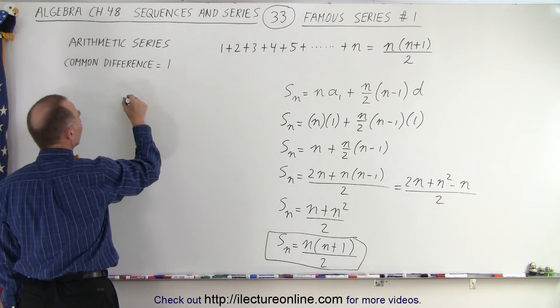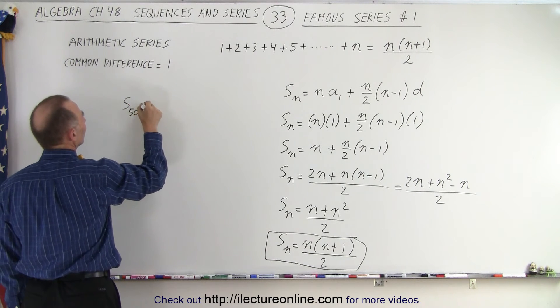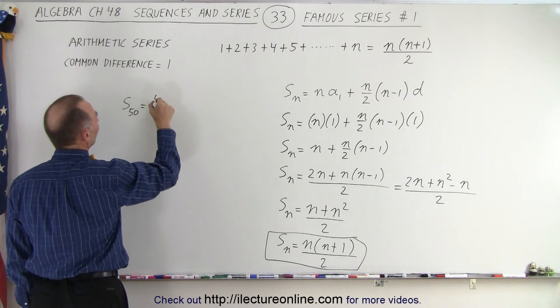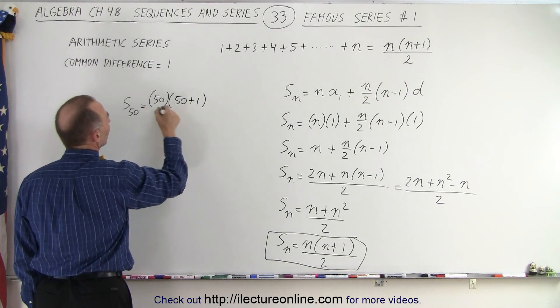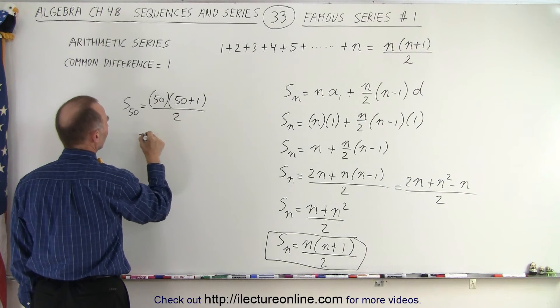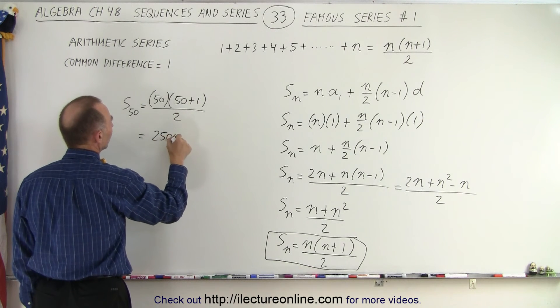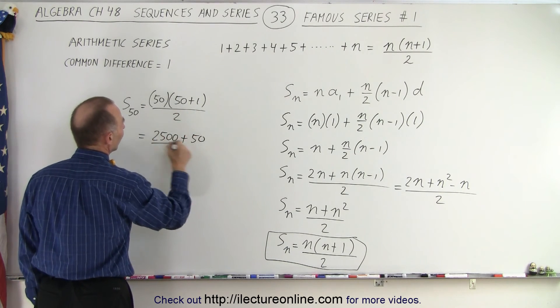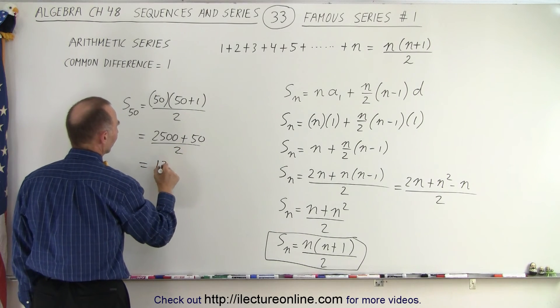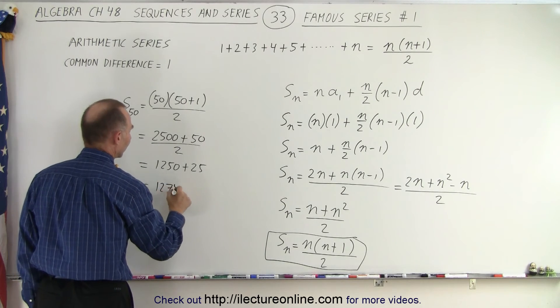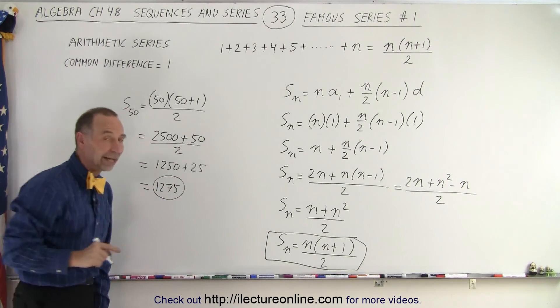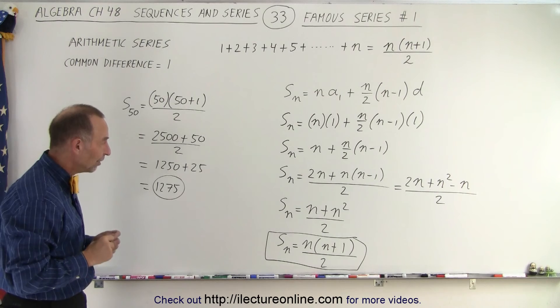Remember when we want s of the first 50 terms, that is equal to 50 times (50+1) divided by 2. And so this is going to be 2500 + 50 divided by 2, which is 1250 + 25, which equals 1275. And that's the same result we got in an earlier video.